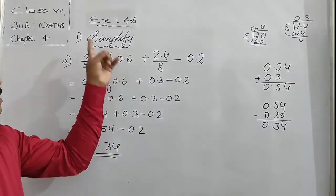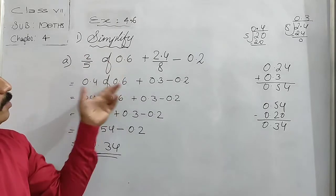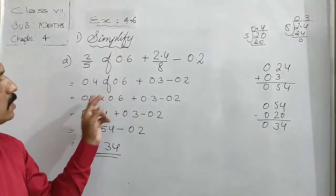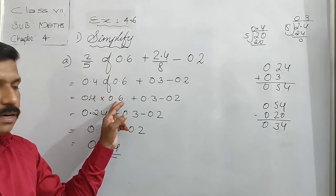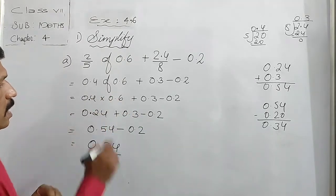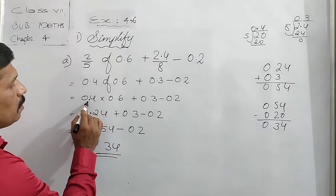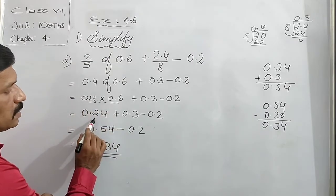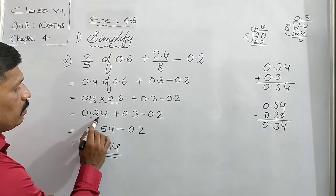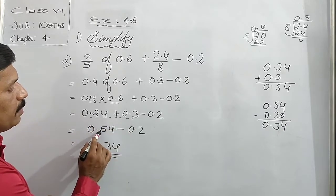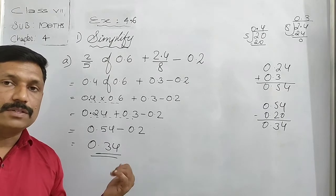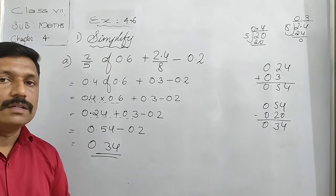So here, first we changed the fractions into decimals. Then according to BODMAS order, the 'of' function multiplication was done first. Then we added that answer. After getting the multiplication answer, we added it. Then after that, subtraction. In this order, in this way we solve the question.